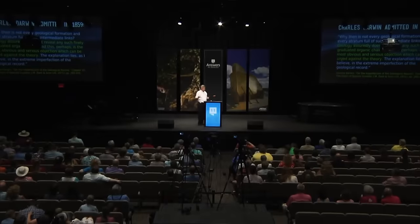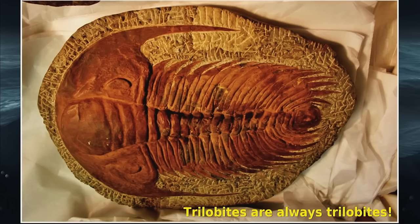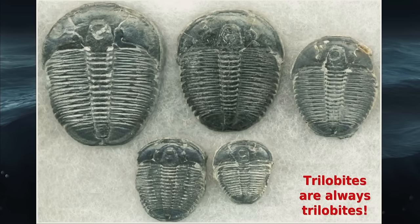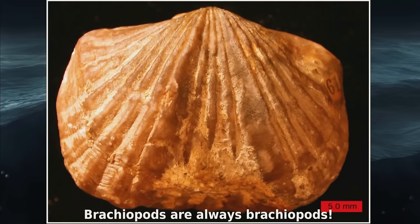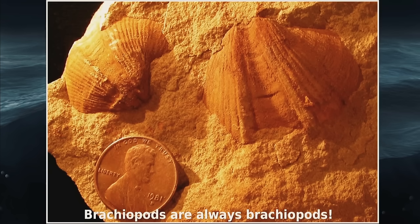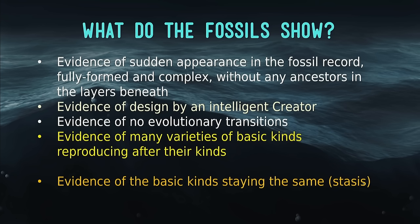In 1859 they hadn't explored most of the world, so we can excuse Darwin. But what about today, when geologists and scientists have been in every corner of the globe? Trilobites are always trilobites — they don't change into something else. They have different shapes, ornamentation, and sizes, but they're always trilobites. Brachiopods have different ribs but the same overall body plan. It's just like dogs — from chihuahuas to great danes, they're all dogs. We also see that once a creature appears in the fossil record, it stays the same.